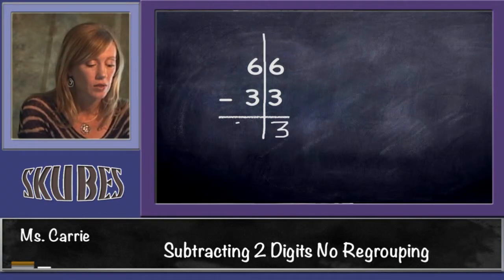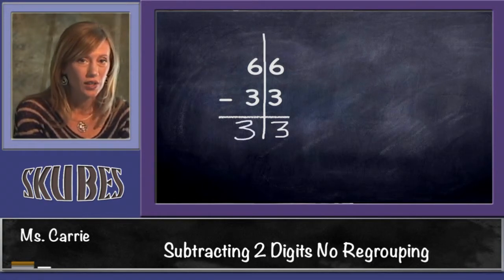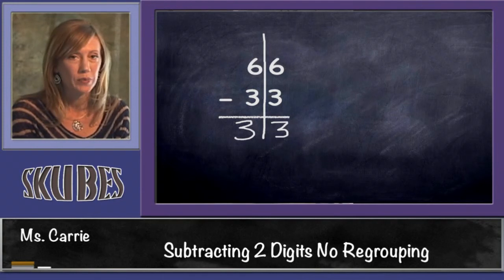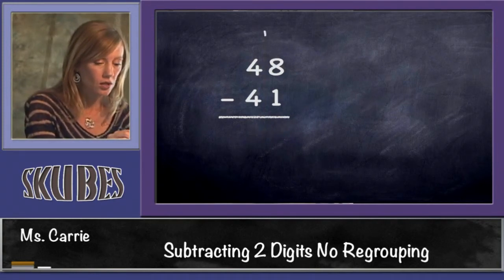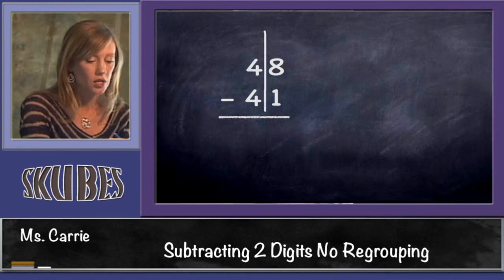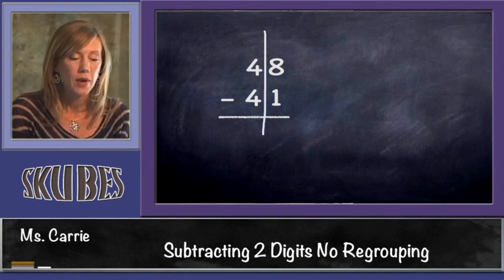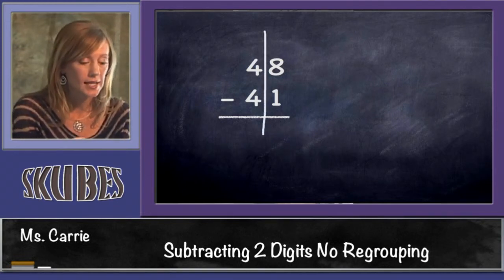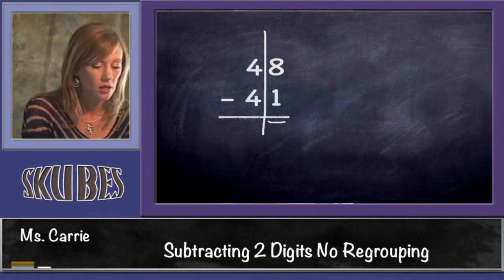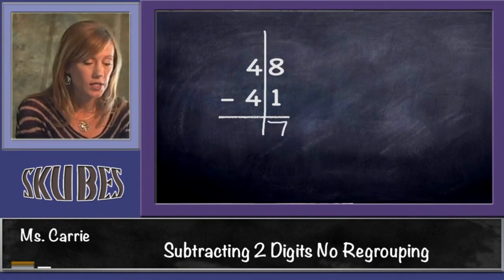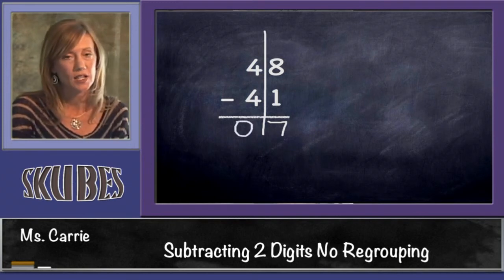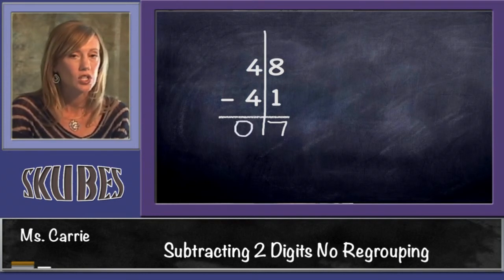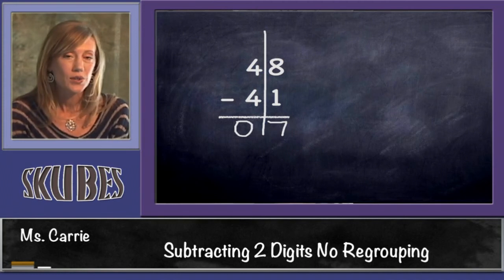Let's try one more. 48 minus 41. Draw our line, start in the ones column. 8 minus 1, we know that 1 less than 8 is 7. And we know that 4 minus 4 is 0. And again, we don't read this answer 07. The answer is just 7. That concludes our lesson today on subtracting double-digit numbers without regrouping.